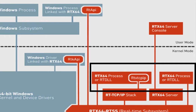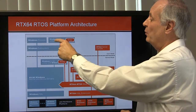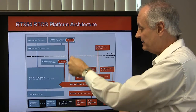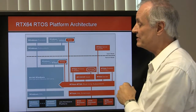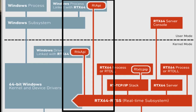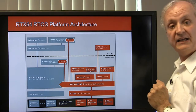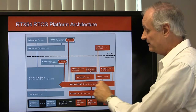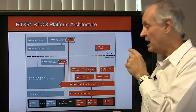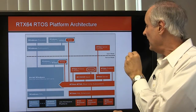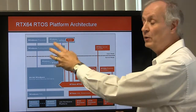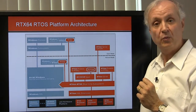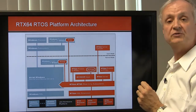There are two others that are hybrids: a Windows process linked into the real-time subsystem, and a Windows driver linked into the real-time subsystem through their individual APIs. RTX 64 processes are loaded by its loader and scheduled by a deterministic RTX scheduler, while Windows processes are handled by the Windows loader and Windows scheduler.